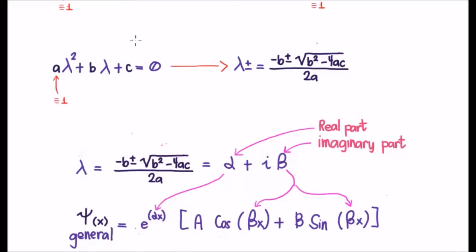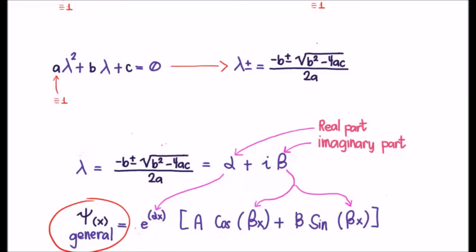Either way, once you solve your characteristic equation, you get the solution lambda, which is a complex number. What you do is take the real component alpha and put it as the exponent of a real exponential. Then take the imaginary component beta and put it as the argument of a linear combination of cosines and sines — a·cos(βx) plus b·sin(βx). This is the general solution to a second-order linear ODE with constant coefficients, which means it is exactly the solution to our time-independent Schrödinger equation.